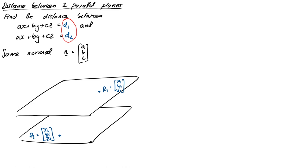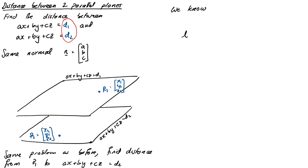So we'll take the same approach as before. The distance we're after is just the distance from P1 to the second plane, AX plus BY plus CZ equals D2. So it's just a point plane distance now. So let's just plug it into our formula from before.